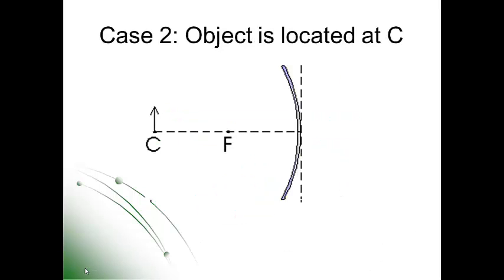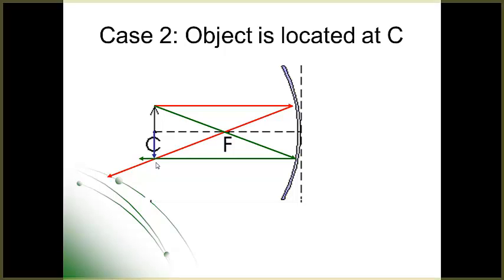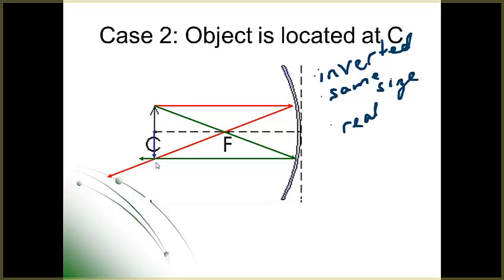Let's move on to case two, where the object is located at the center of curvature. Draw ray one parallel to the axis — it reflects through the focal point. Ray two starts at the same place, goes through the focal point, and reflects parallel. Where they cross locates the image. Describing this image: it's inverted, it is the same size as the object, and it is a real image. Hit pause, measure the distance from the object to the mirror, measure the focal point, and do your calculation.